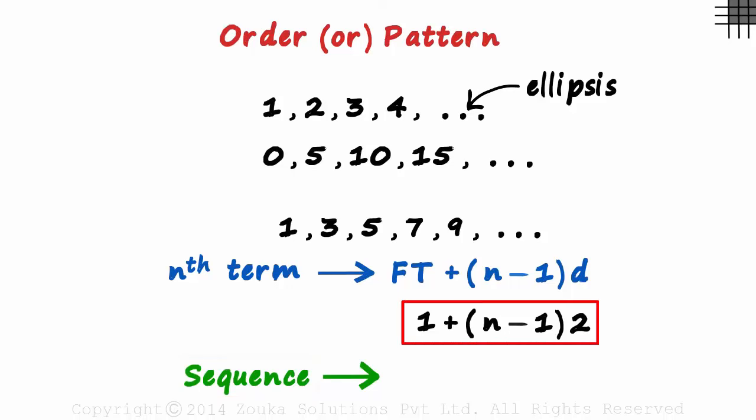We just solve this further. Expanding this gives us 2n minus 2. And we add the 1. This gives us 2n minus 1.